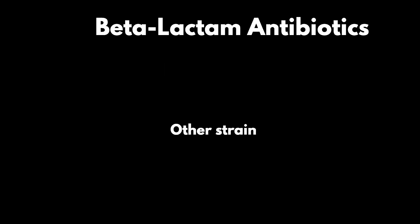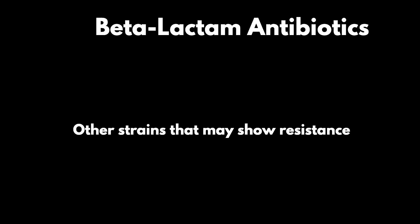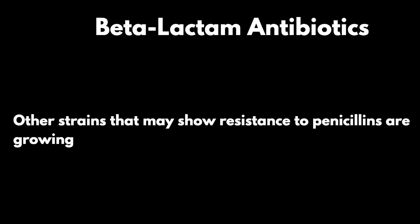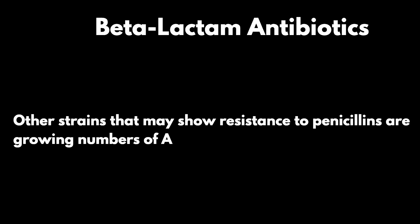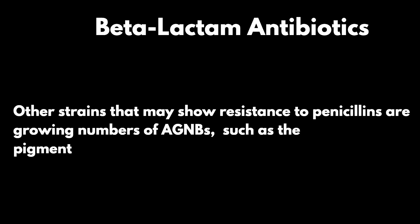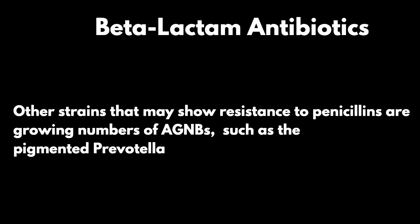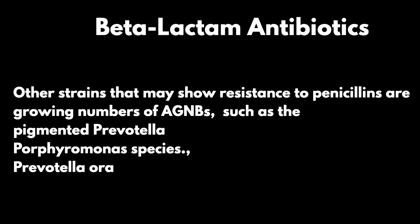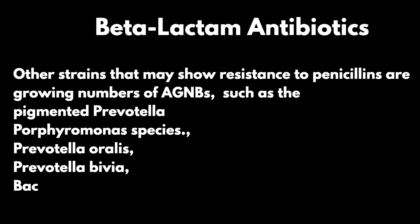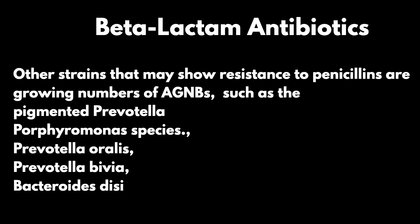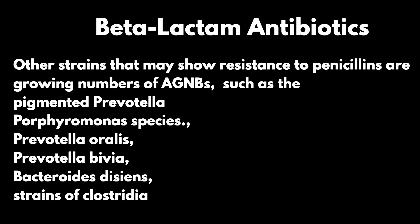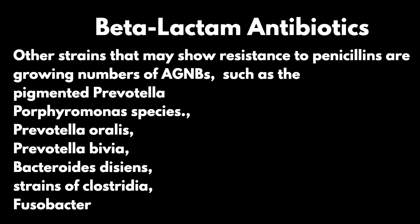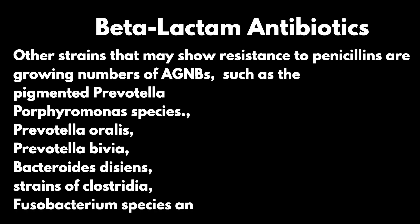Other strains that may show resistance to penicillins include growing numbers of anaerobic gram-negative bacteria (AGNB), such as the pigmented Prevotella and Porphyromonas species, Prevotella oralis, Prevotella bivia, Bacteroides disiens, strains of Clostridia, Fusobacterium species, and microaerophilic streptococci.